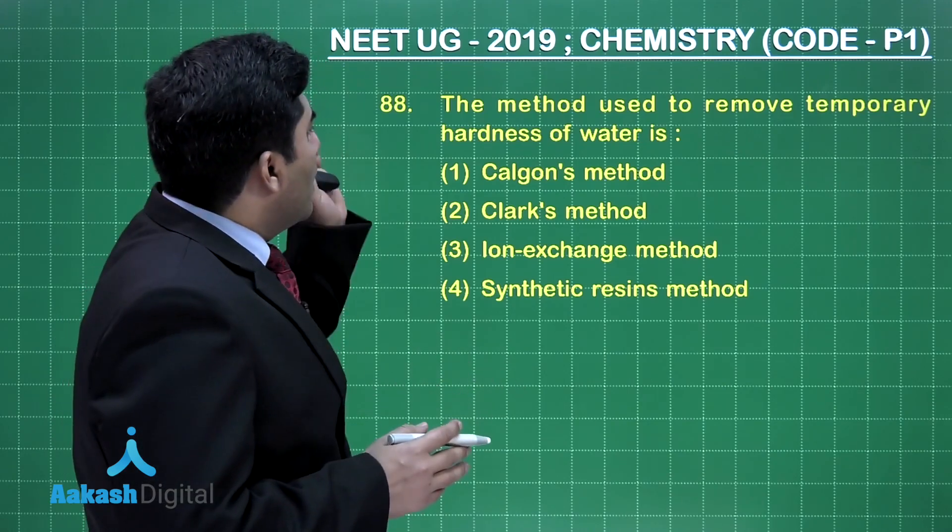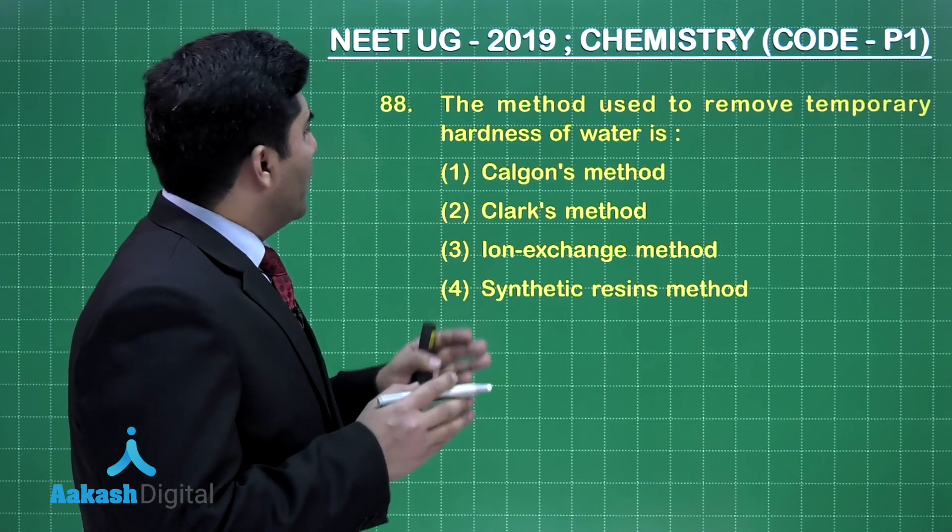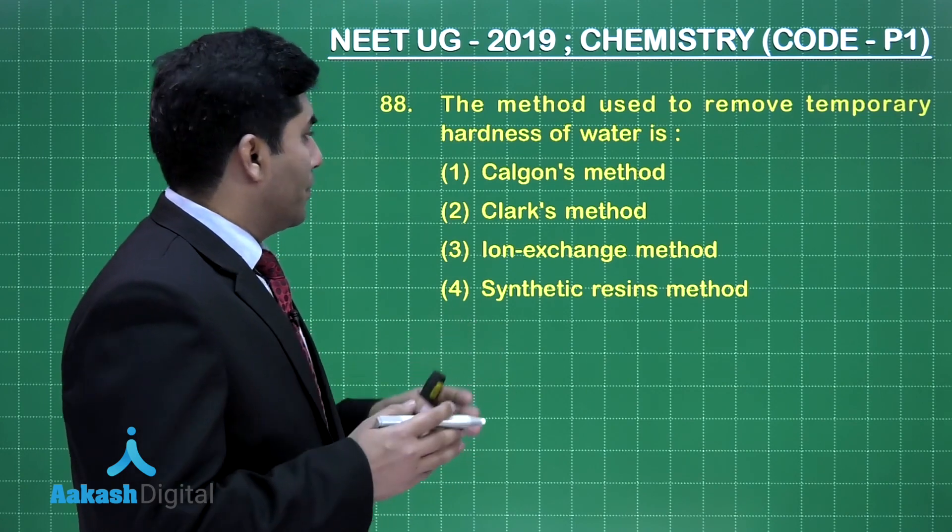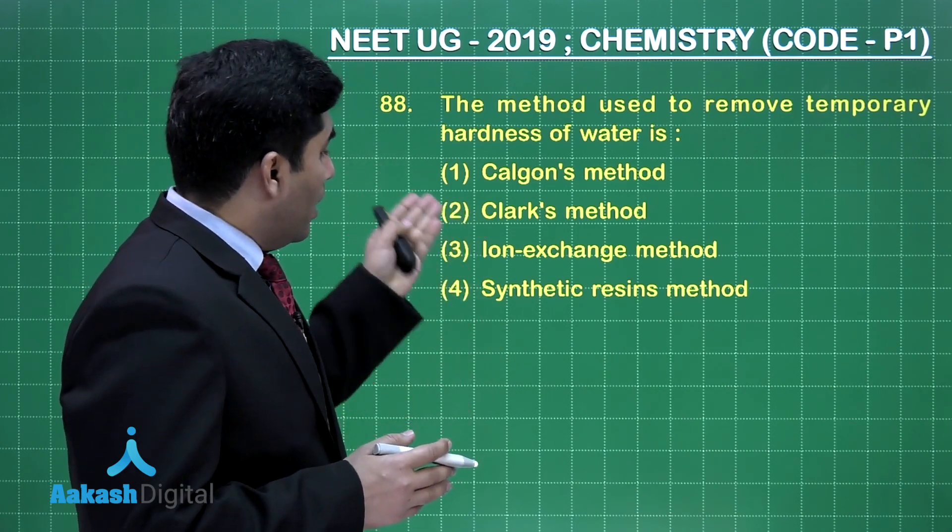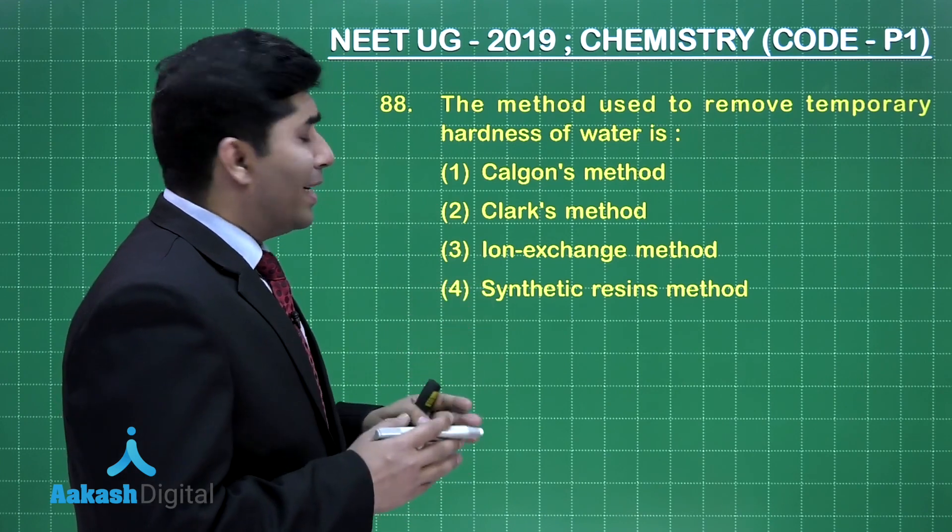Now, in this question, he is asking, the method used to remove the temporary hardness of the water is? Calgan's method, Clark's method, ion exchange method, synthetic resin method.